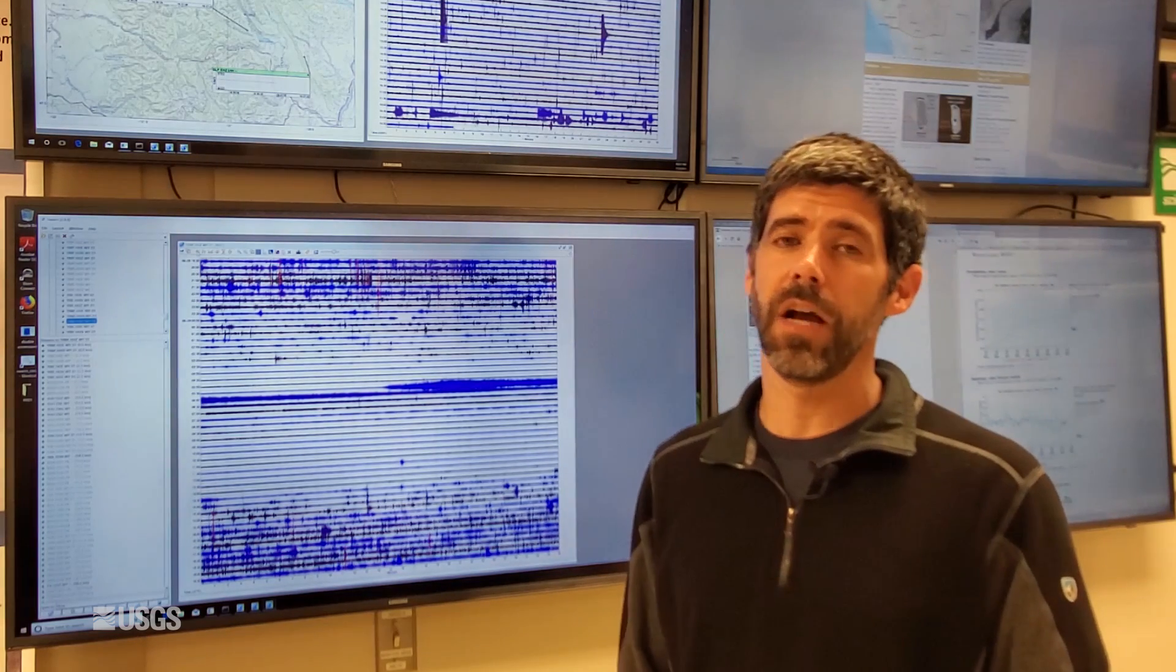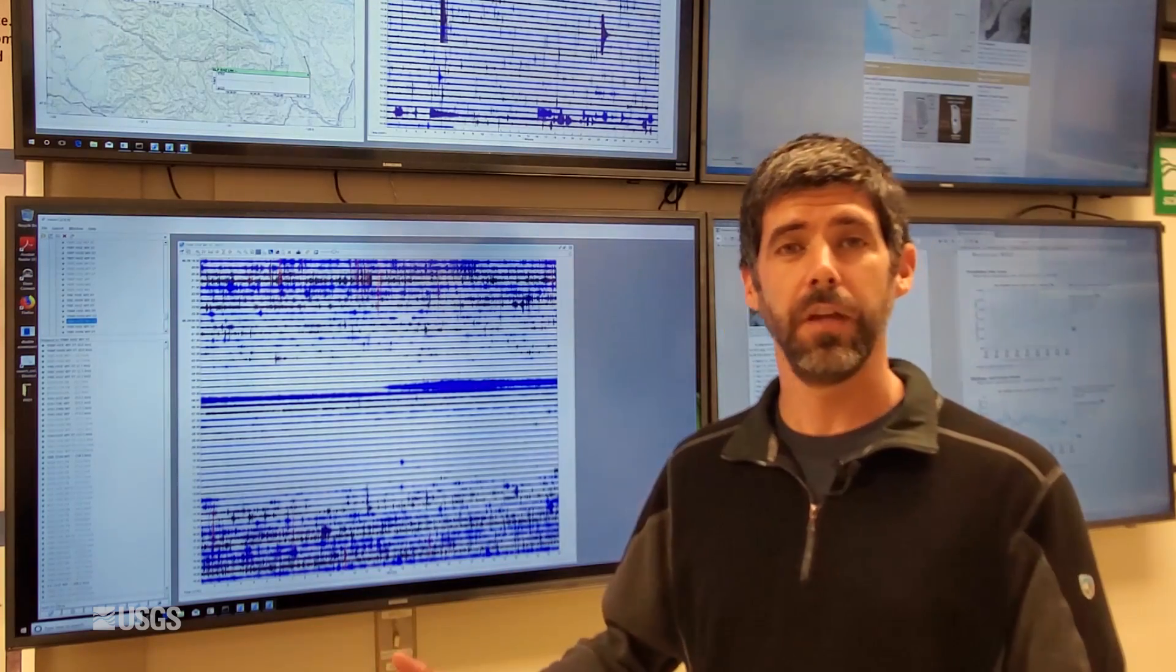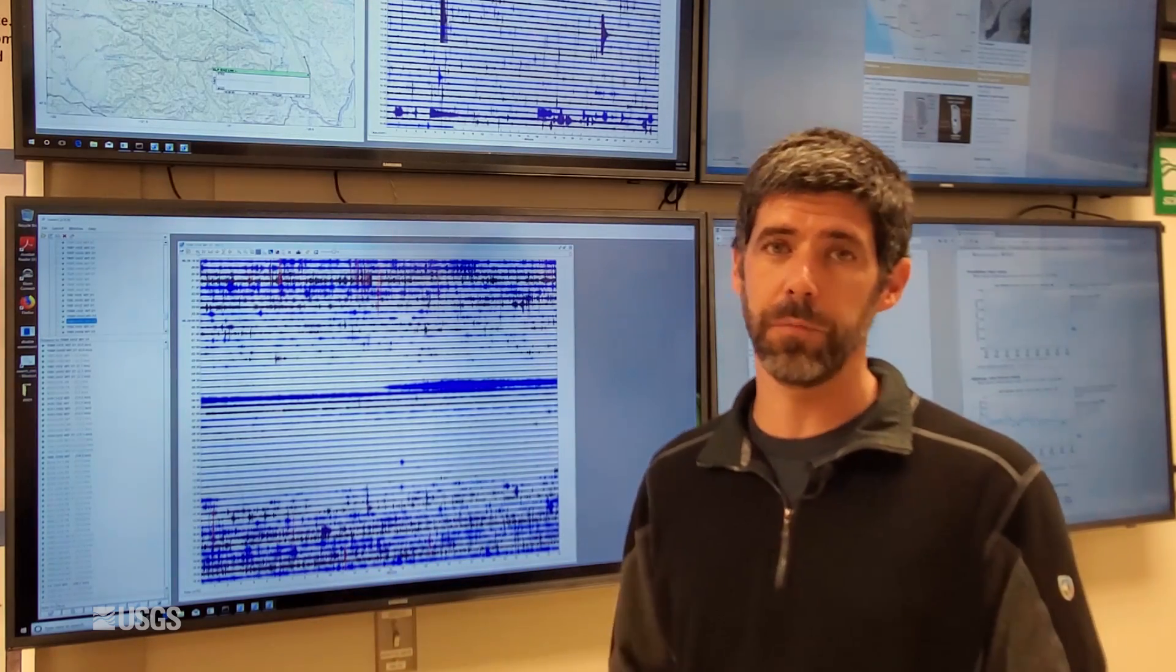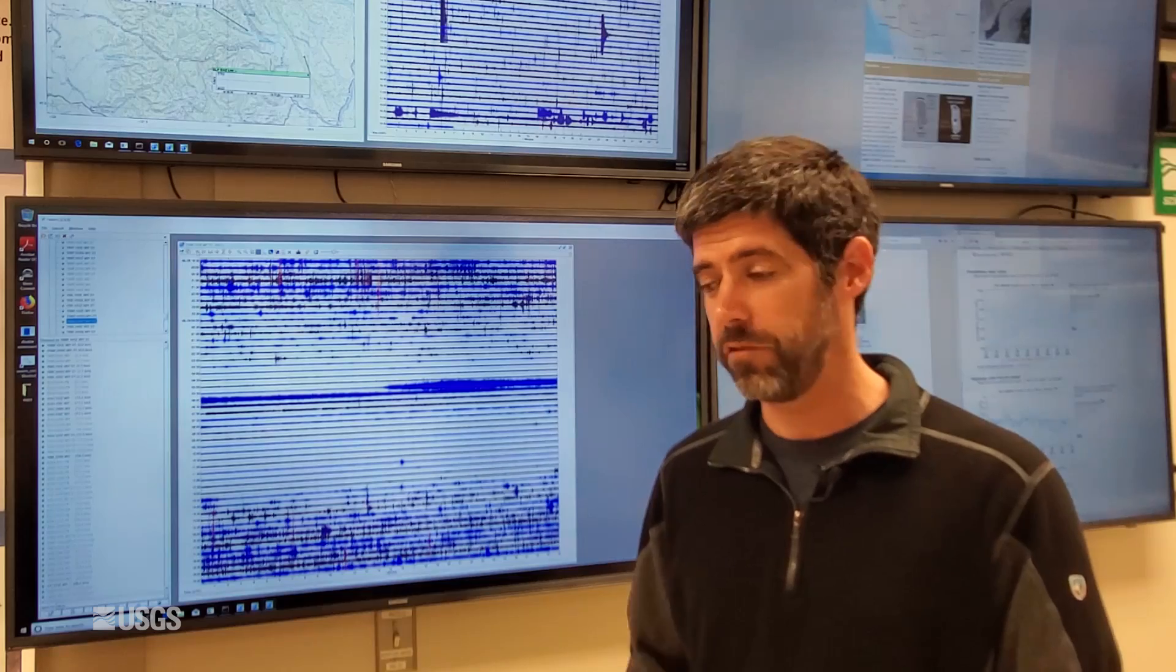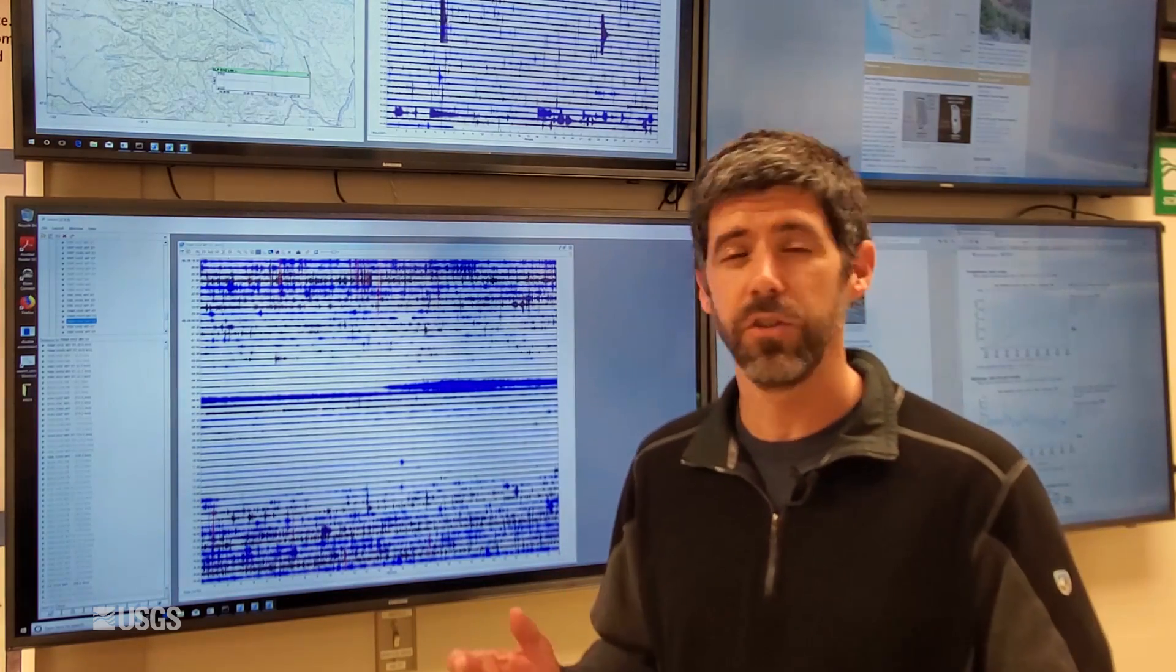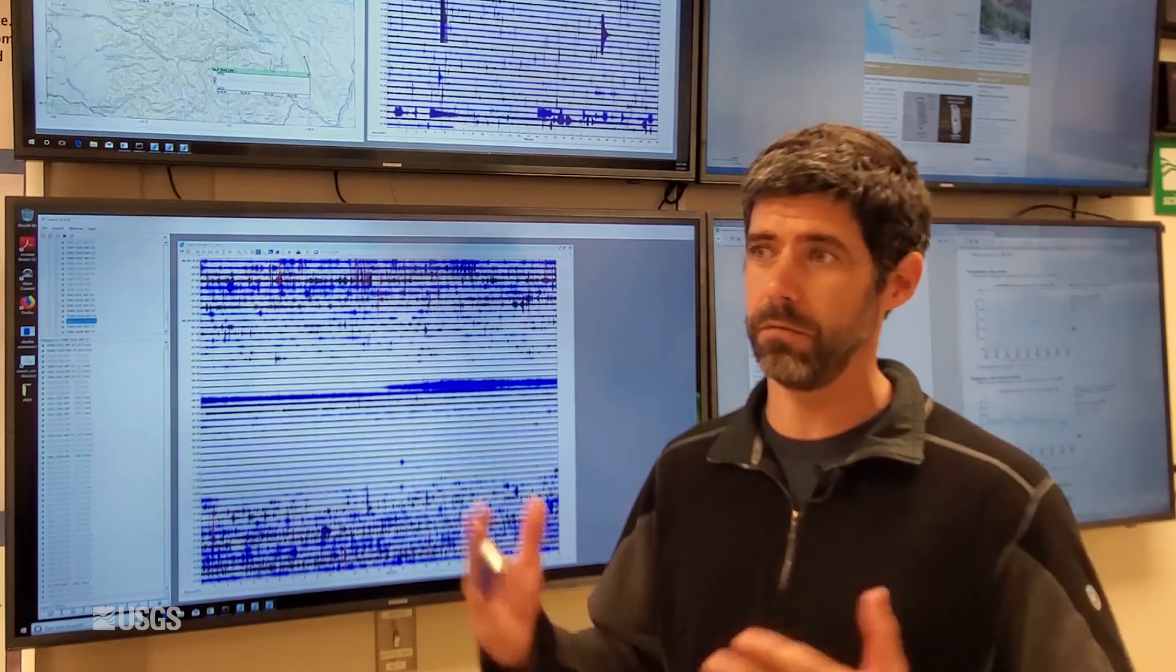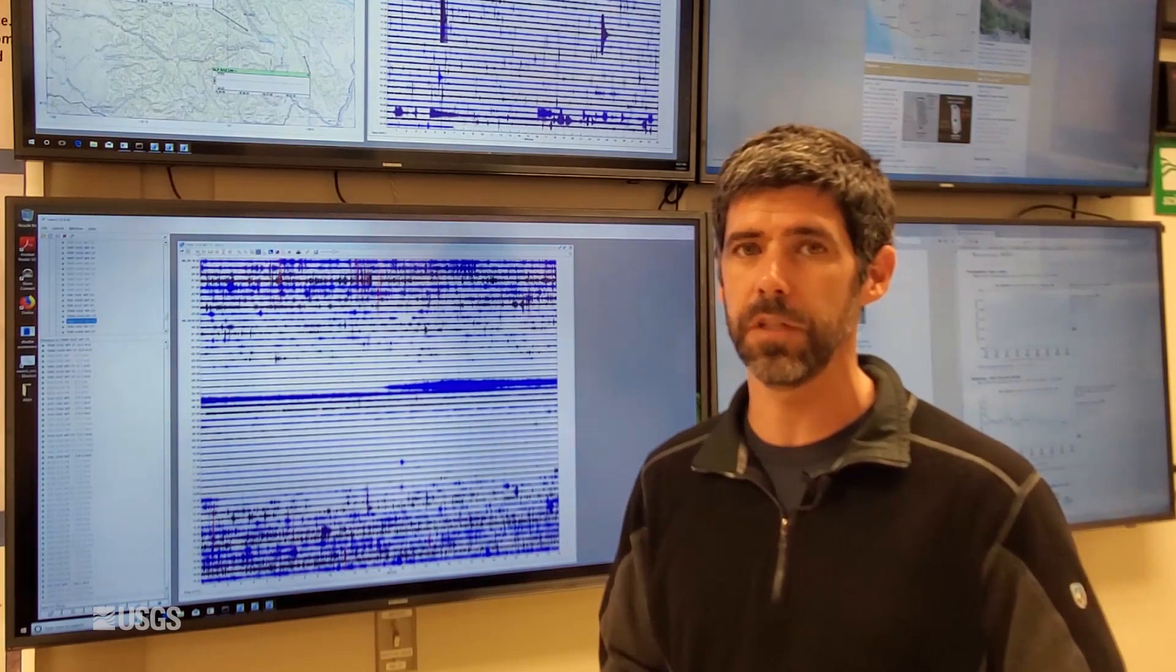Before we dive into the data, I wanted to look at some Steamboat eruptions. Steamboat had a record-setting month. As you may have heard, there were seven water eruptions over the course of June, including the shortest interval between Steamboat eruptions ever recorded—just a little over three days. A really spectacular month for Steamboat, wowing the visitors to Yellowstone National Park.